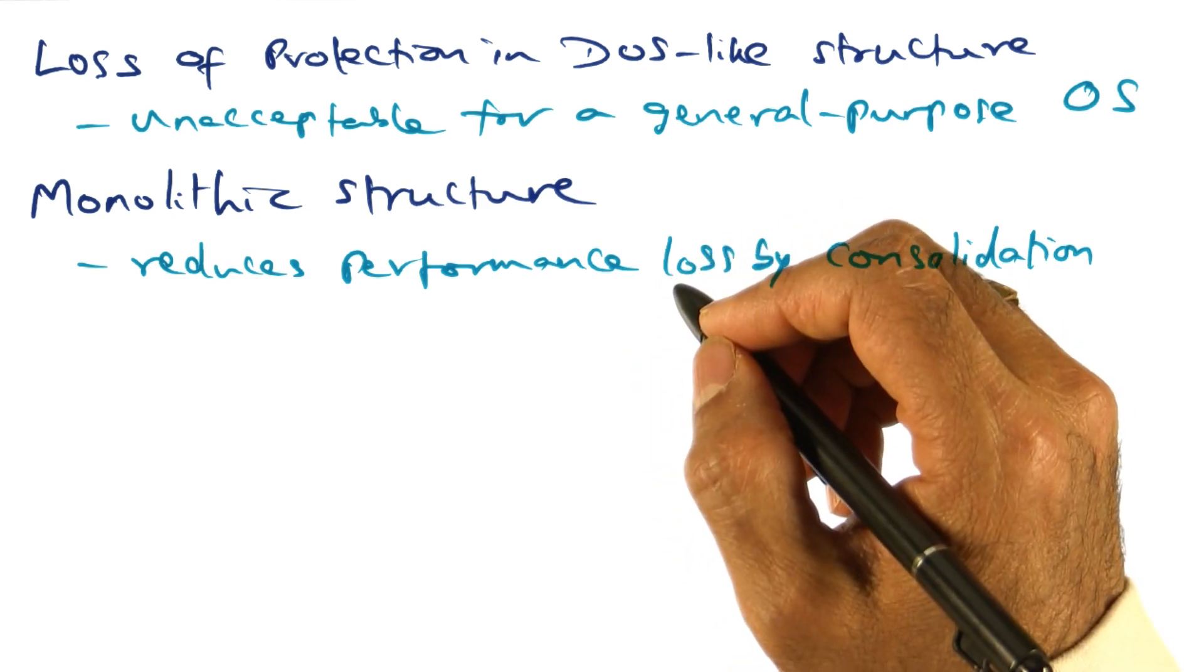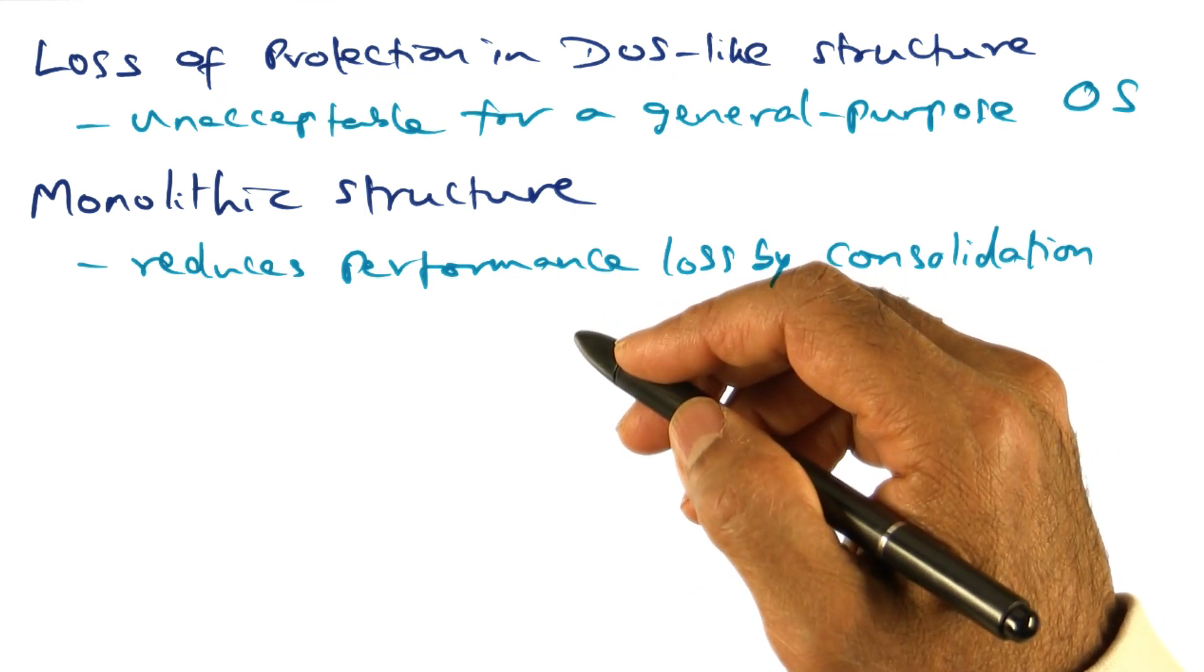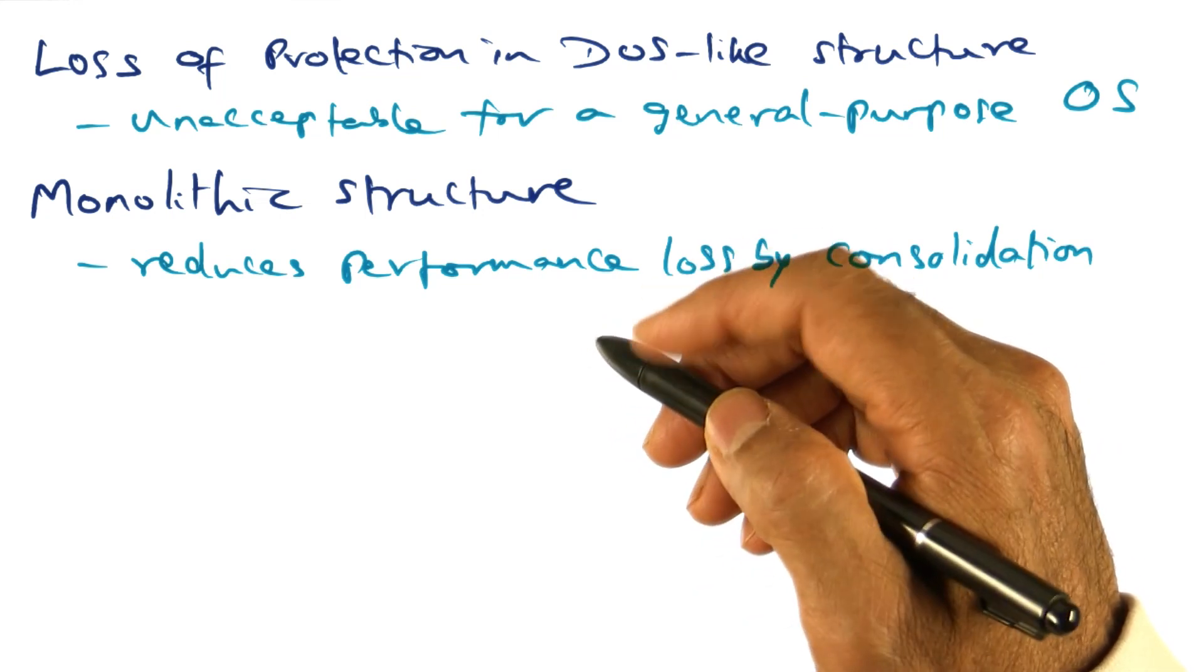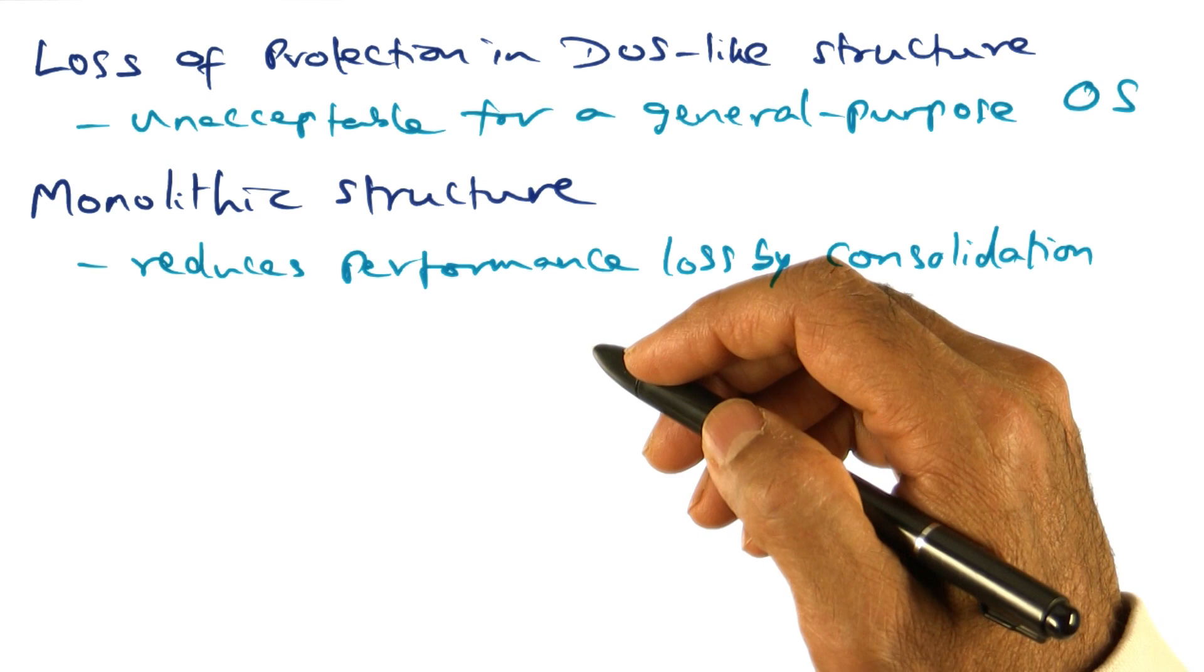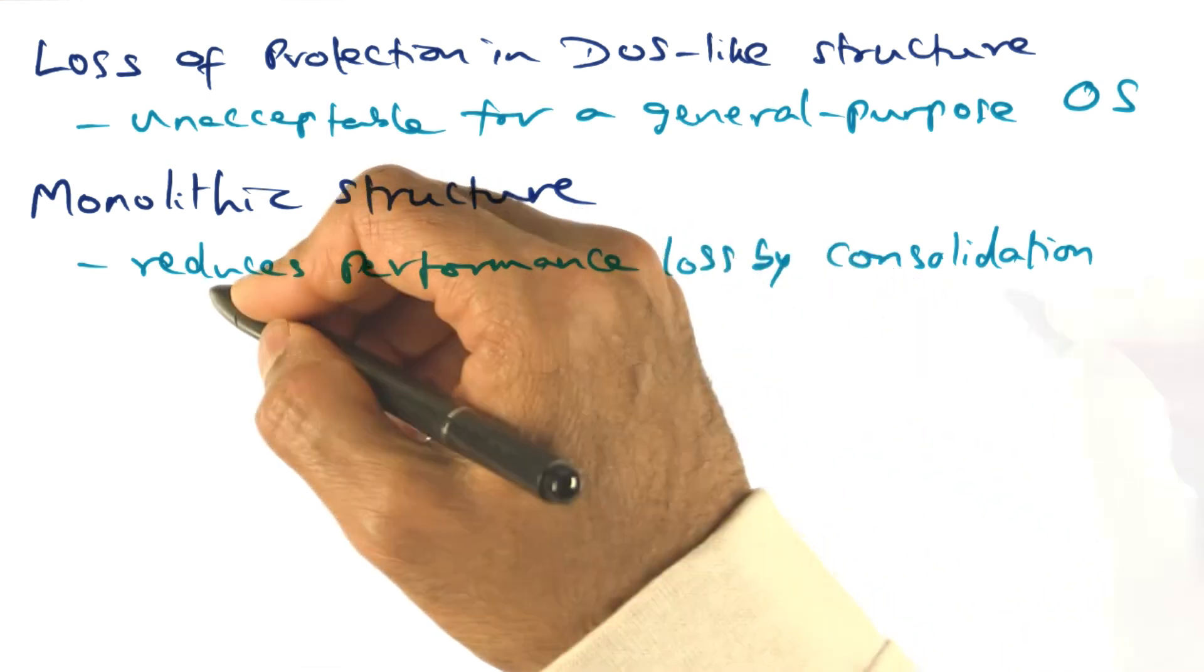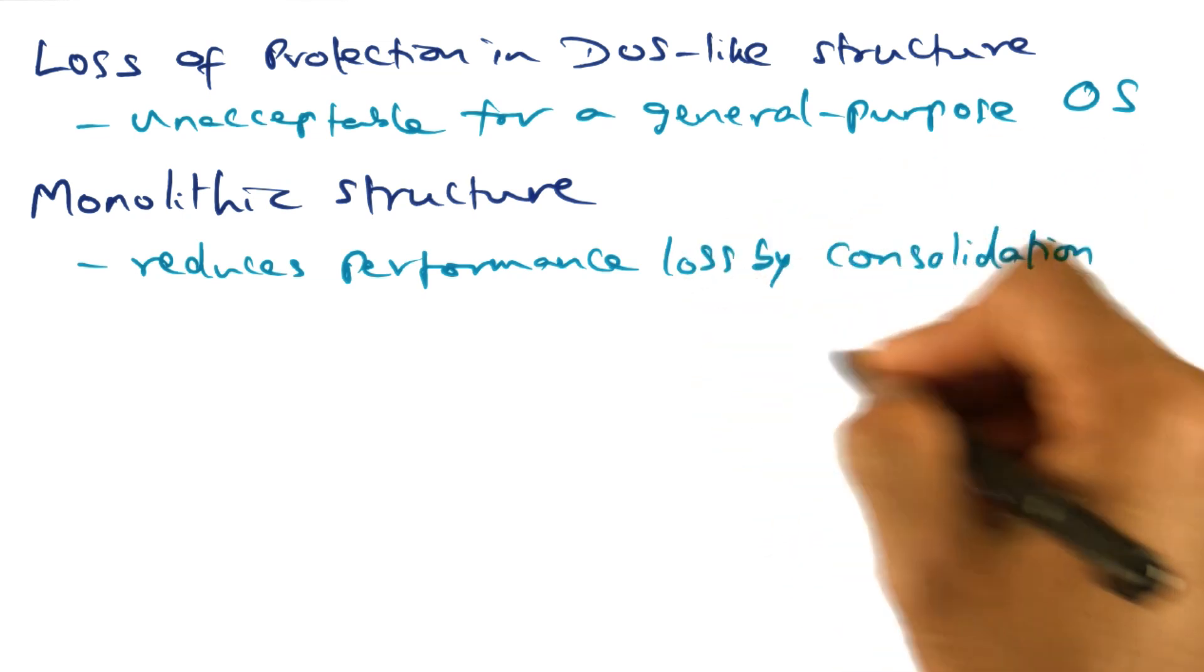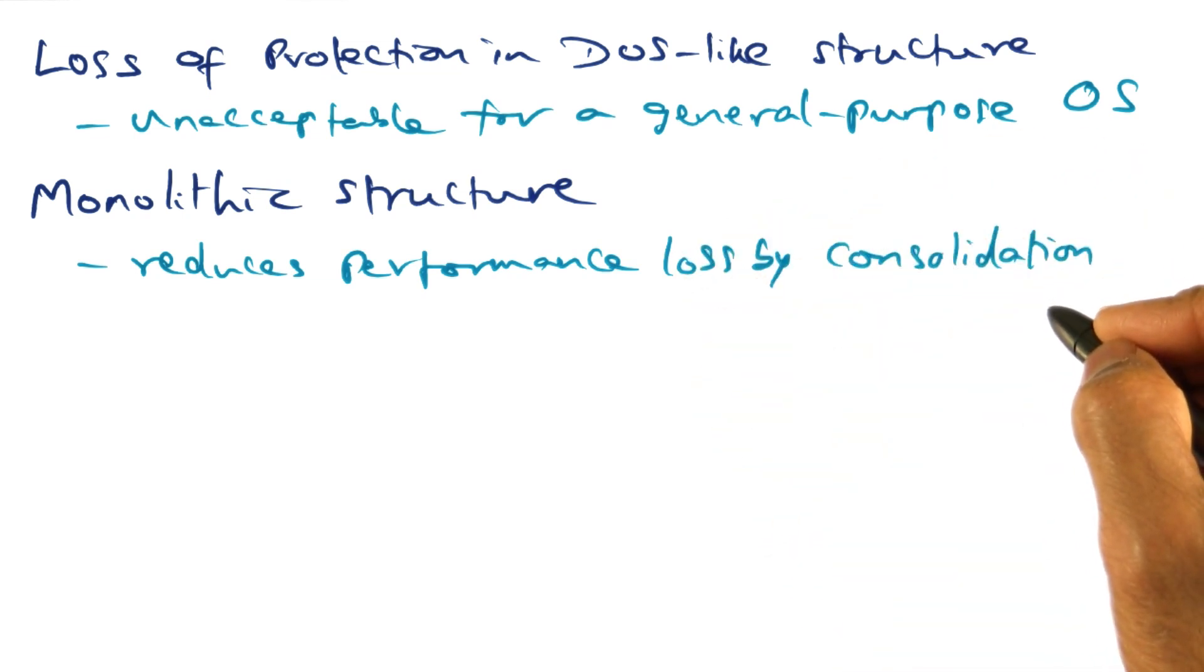So this monolithic structure ensures that even though we have to go from an application into the operating system's address space, once you're inside the operating system's address space, potential for performance loss is avoided by the consolidation of all the components that comprise the operating system.